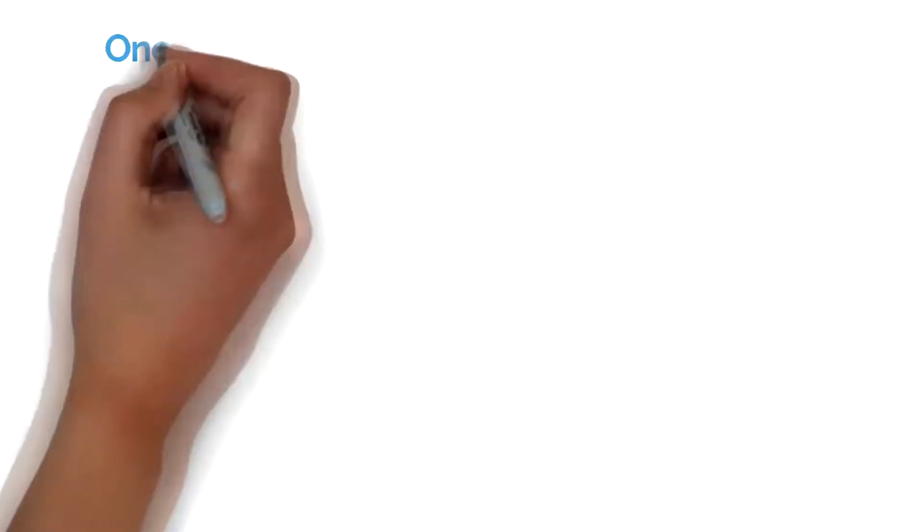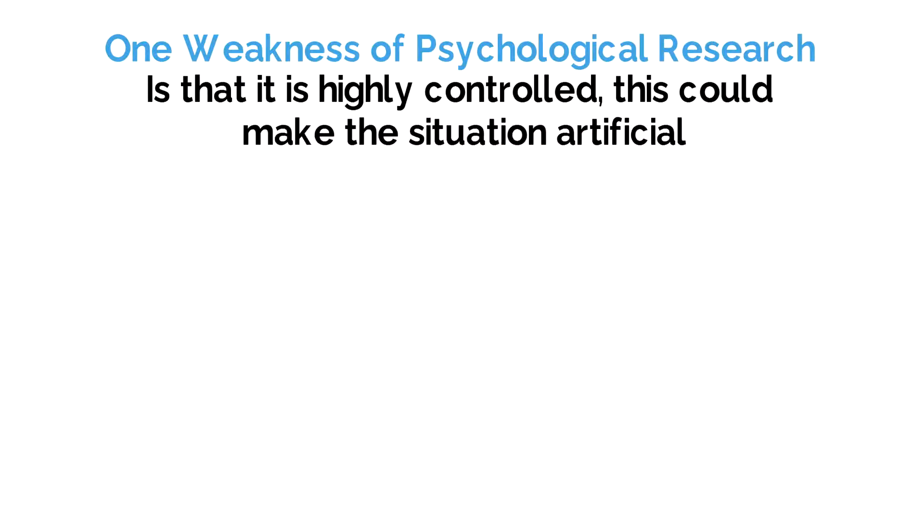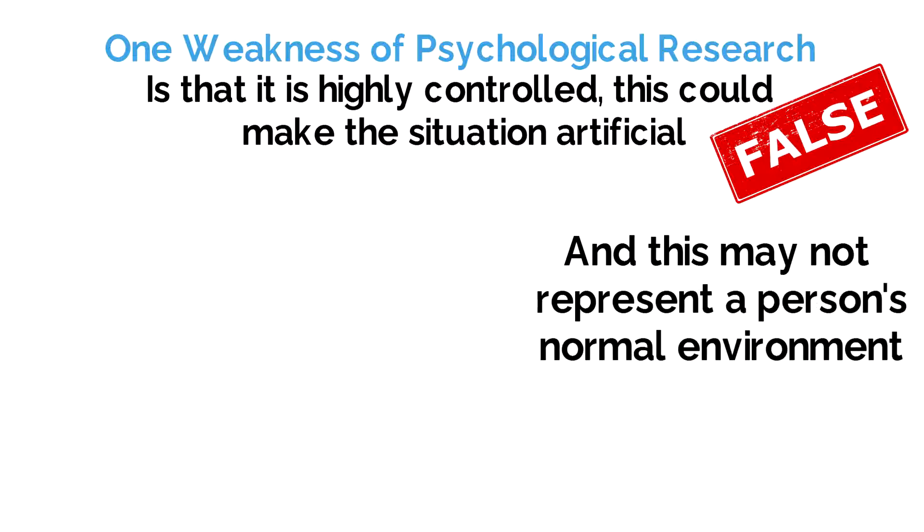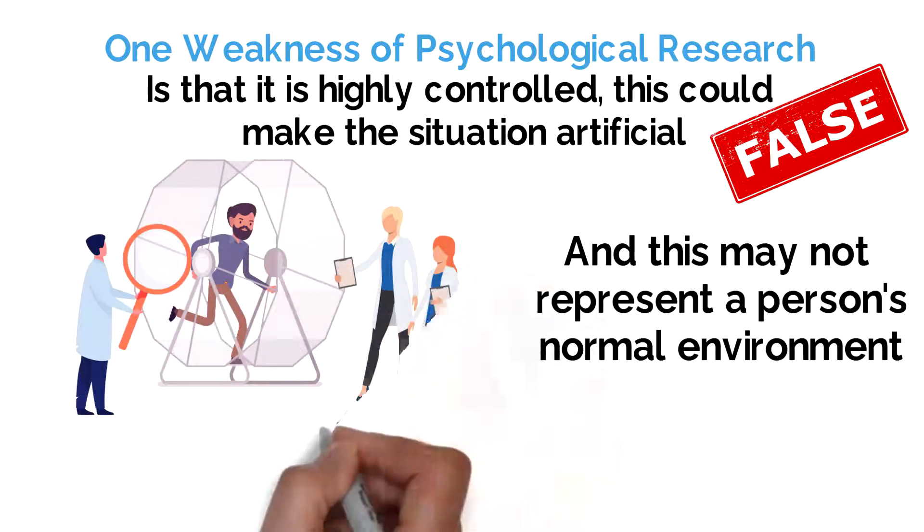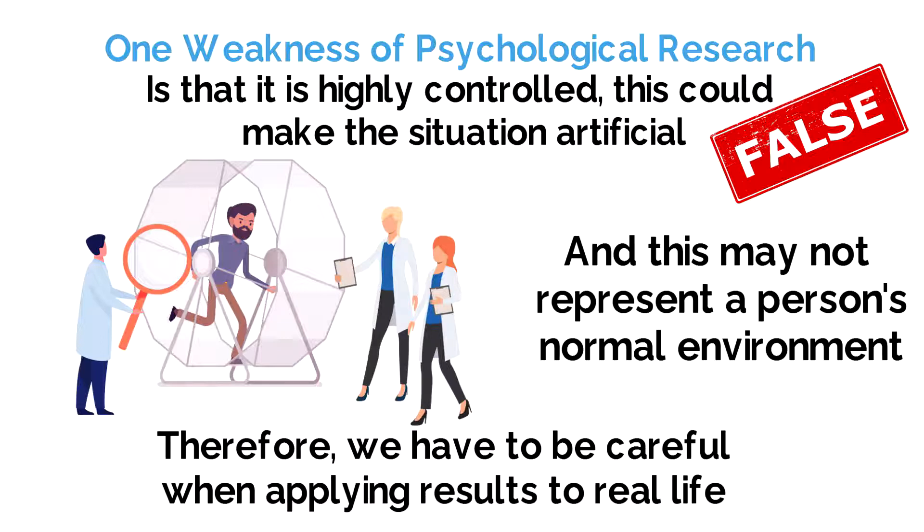One weakness of psychological research is the fact that it is often highly controlled, means that the situation will be artificial, and therefore will not reflect a person's normal environment, hence it would be low in ecological validity. We therefore have to be careful about applying results to real life,